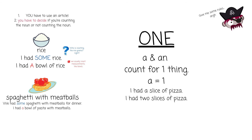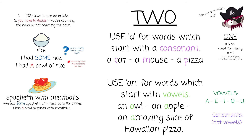Give me some rules! You're definitely right, there are some rules. So, for one thing "a" and "an" are the same — they count one thing. I had a slice of pizza or I had two slices of pizza. "A" equals one and "an" equals one too. We use "a" for all words which start with a consonant, like cat, mouse, or pizza — a cat, a mouse, a pizza. We use "an" for all words which start with vowels, like owl, apple, or amazing slice of Hawaiian pizza. Vowels are A, E, I, O, and U, and consonants are not vowels.